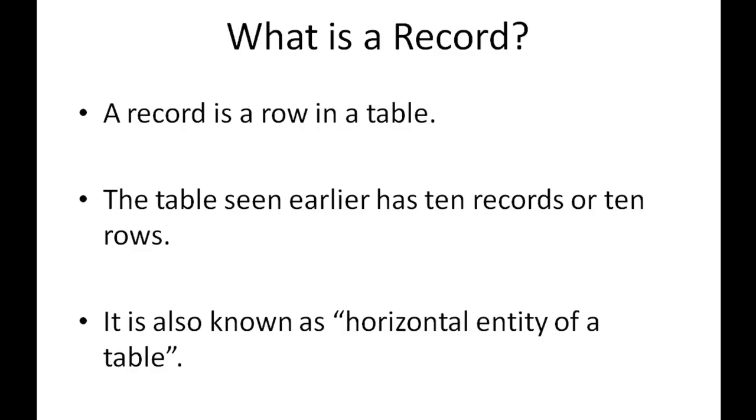The next slide asks us yet another question: what is a record? A record is a row in a table, and the table seen earlier has 10 records or 10 rows. Each row has three columns: in the first column you have rank of a tennis player, in the second column you have the tennis player's name, in the third one you have the tennis player's age. There are 10 rankings, so corresponding to the 10 rankings you have 10 rows.